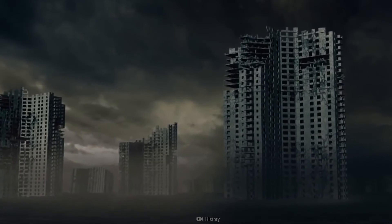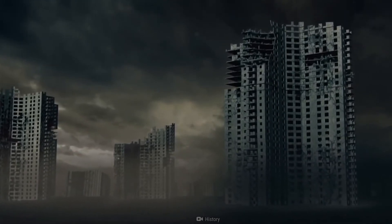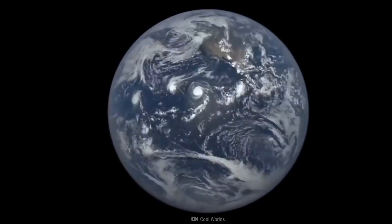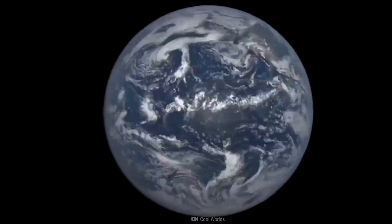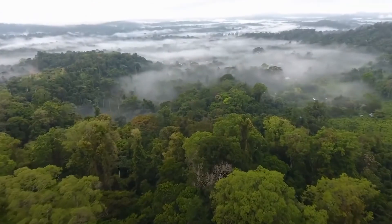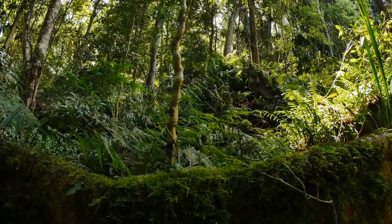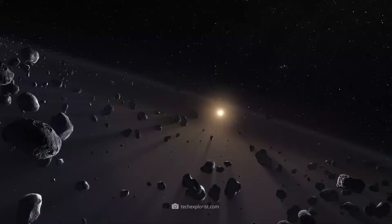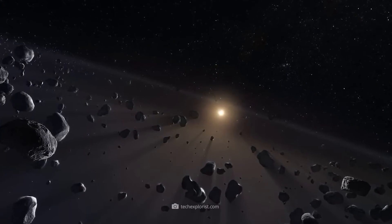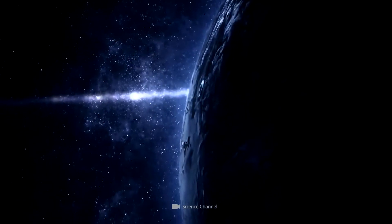Extreme cold: Neptune is the eighth planet from the sun and is located in the outer reaches of the solar system. Its average temperature is around minus 218 degrees Celsius (minus 360 degrees Fahrenheit). This frigid temperature is far colder than anywhere on Earth and would quickly freeze and damage human cells, leading to rapid incapacitation and death.